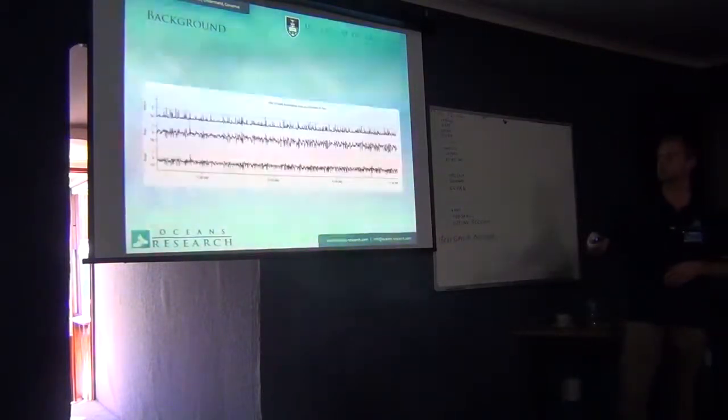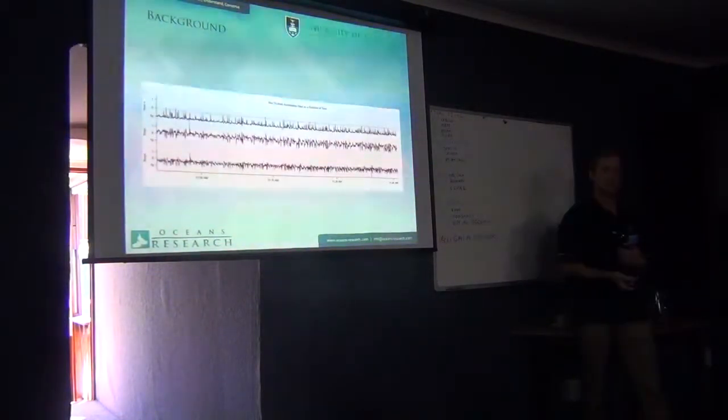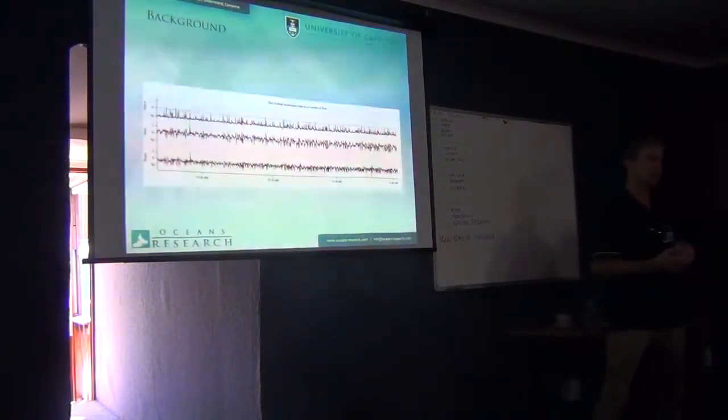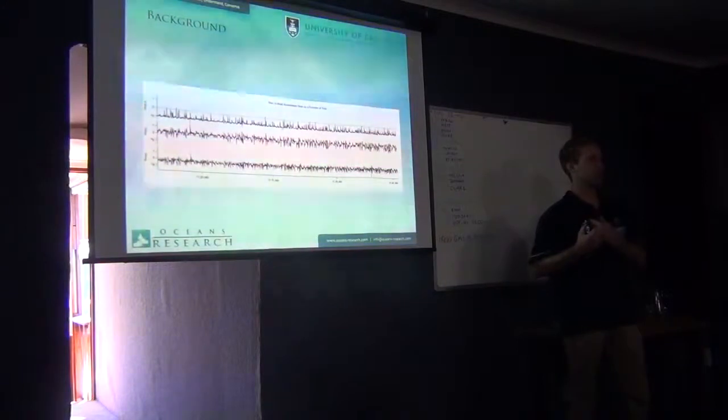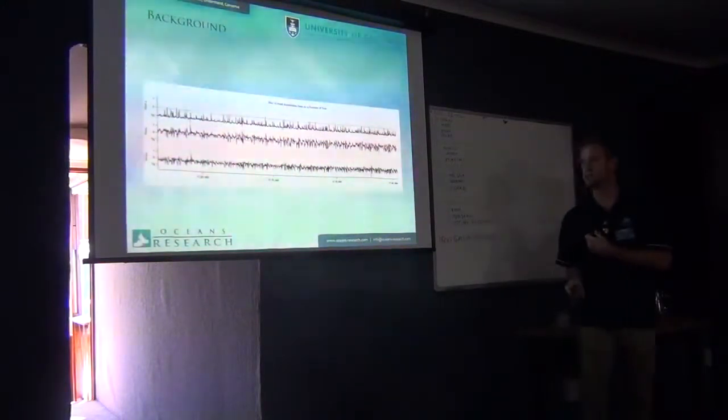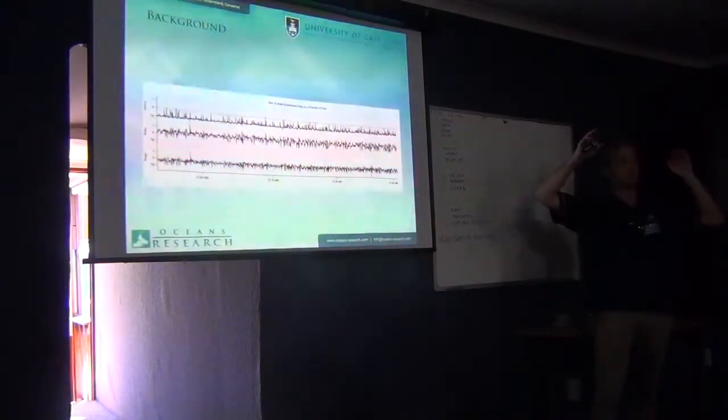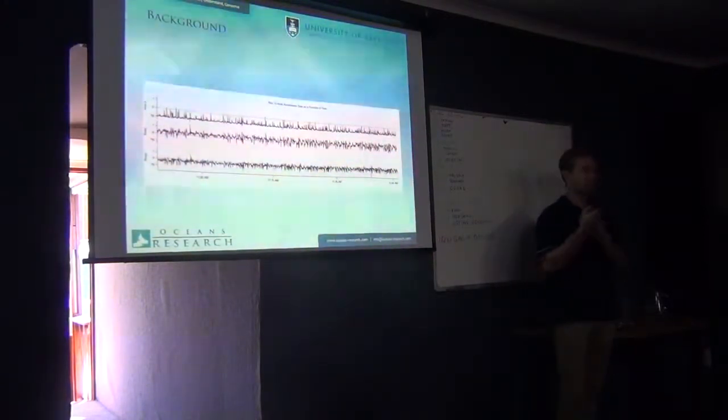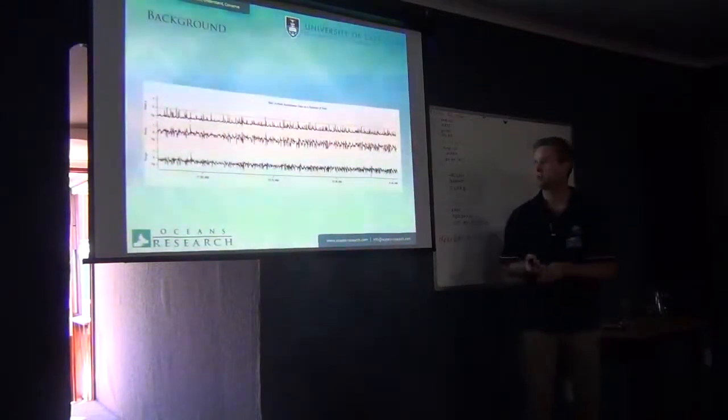So we start adding sensors to these tags. Nowadays, we've got about 24, I think, different sensors that are commonly in use. Things like ECGs, measuring heart rate of a free-swimming animal. CTDs, measuring the external environment that the animal is swimming through. The conductivity, the temperature, the water depth. The accelerometer is one of these new devices that I've been playing with.